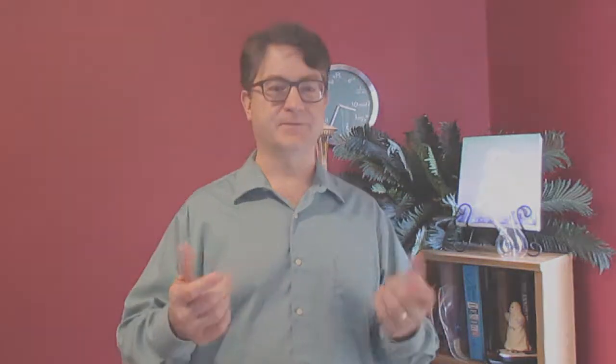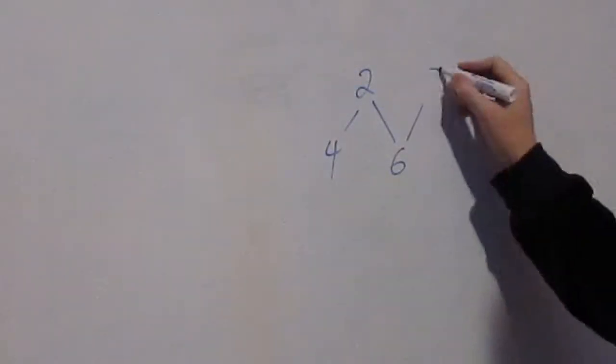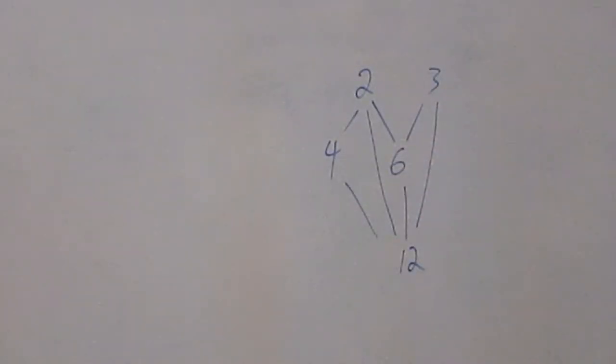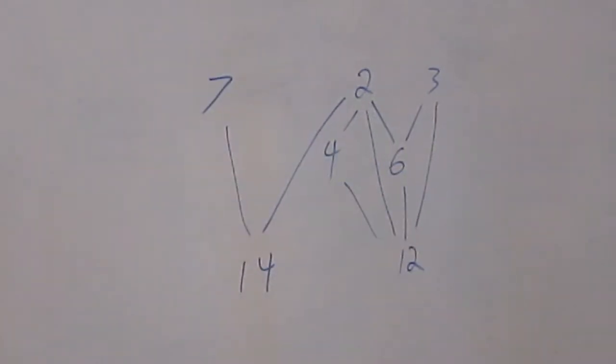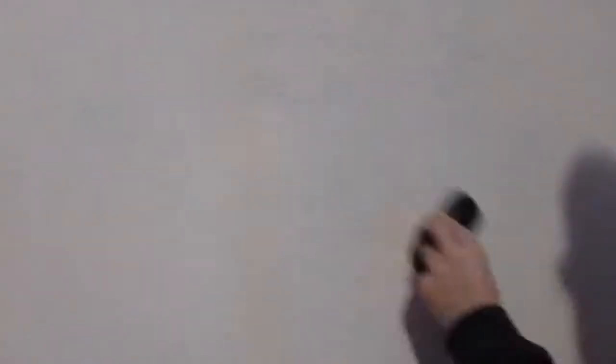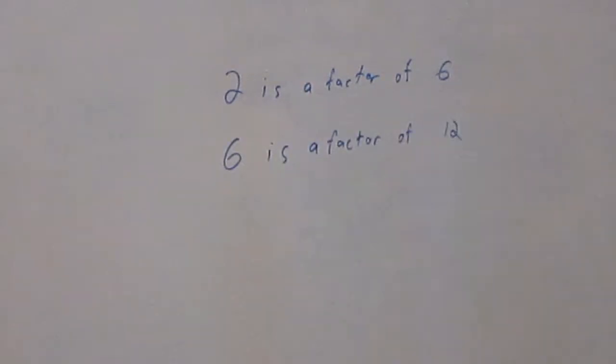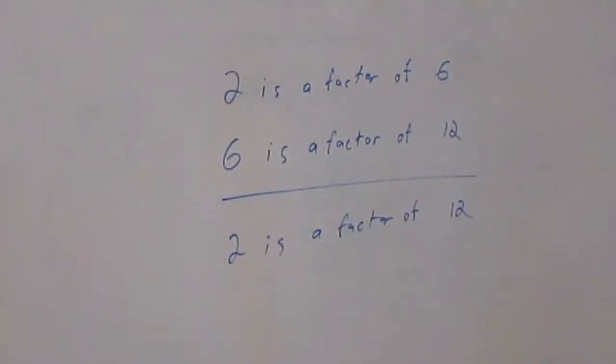There's another way that we can order the positive integers, and that's with multiples and factors. I can draw the graph of all the factors and the multiples, and that graph would embody the transitive property of this relation. If 2 is a factor of 6 and 6 is a factor of 12, then 2 must be a factor of 12.